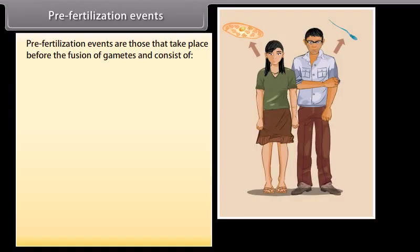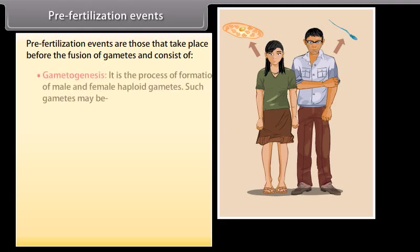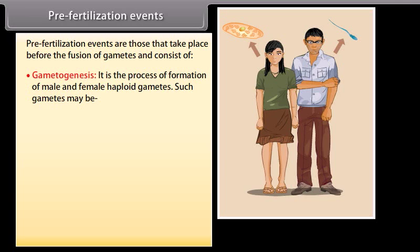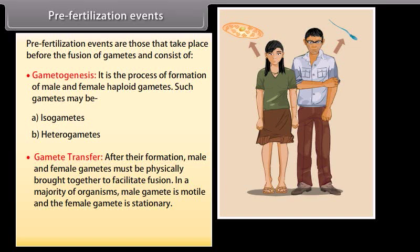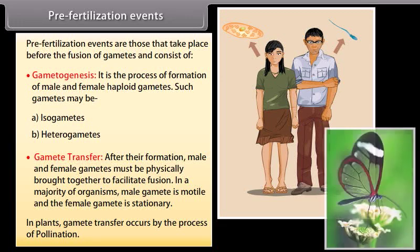Pre-fertilization events are those that take place before the fusion of gametes and consist of gametogenesis — the process of formation of male and female haploid gametes, which may be isogametes or heterogametes — and gamete transfer. After their formation, male and female gametes must be physically brought together to facilitate fusion. In plants, gamete transfer occurs by the process of pollination.